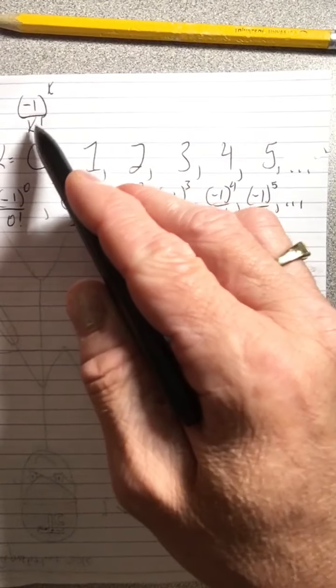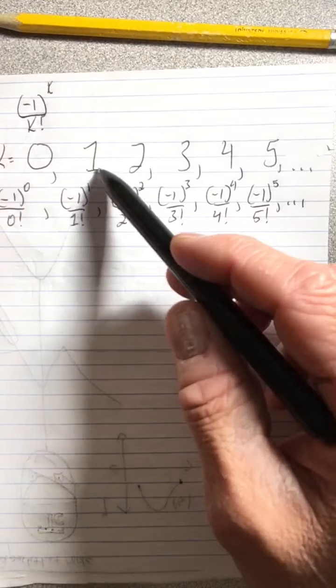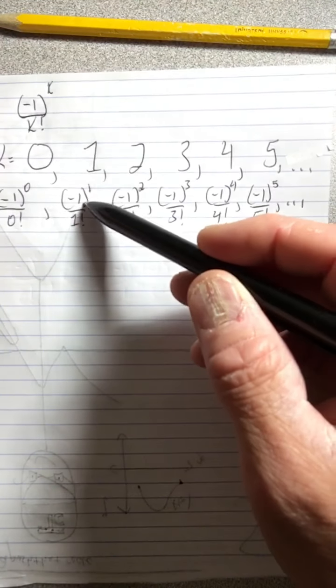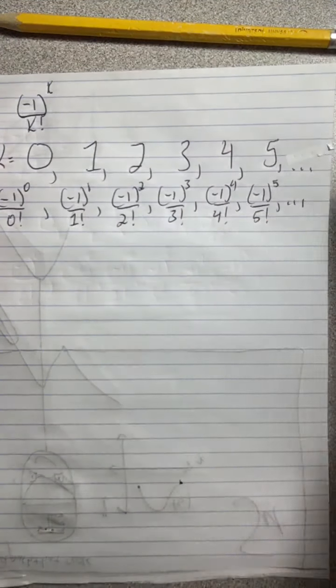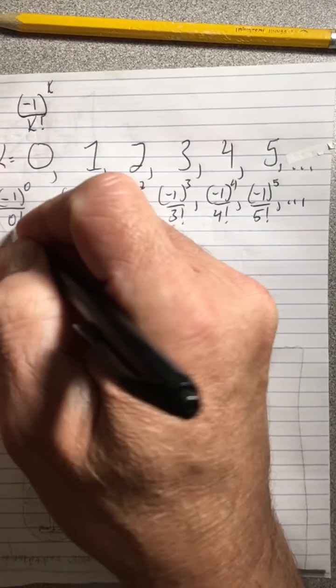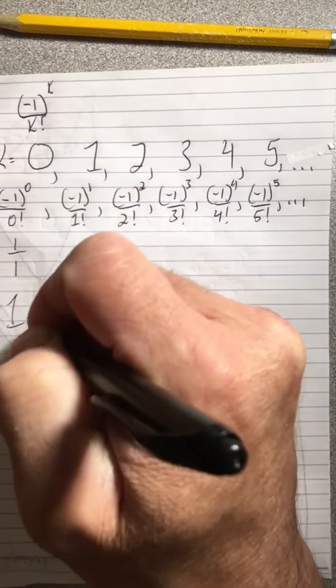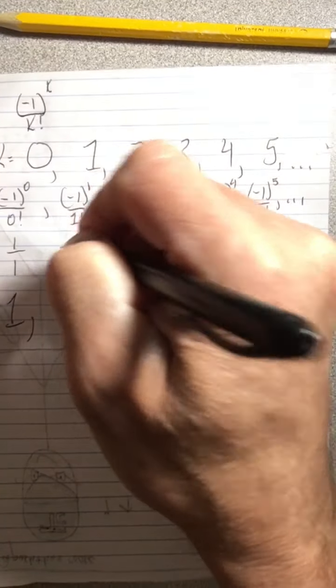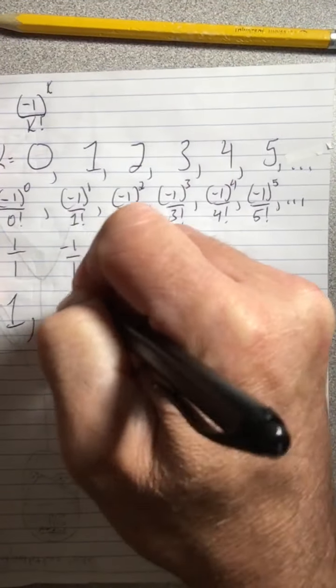I put zero in for k and I have negative one to the zero over zero factorial, then I put one in for k and I have negative one to the one over 1 factorial, and so forth. Negative one to the zero is one, and zero factorial is one, so that's a big fat one. Negative one to the one is negative one, and one factorial is one, so I get negative 1.